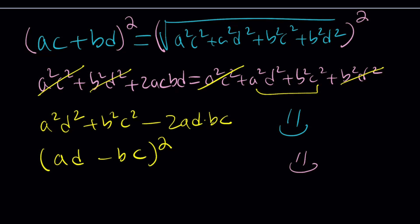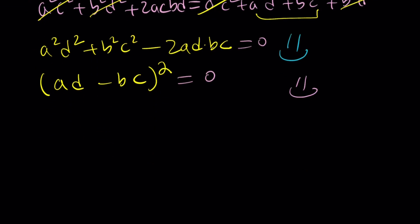So what does that mean? AD minus BC squared? We put everything on the same side. So this is equal to zero. That means AD is equal to BC. So what? We got that. But what are we looking for? We're not looking for ABCD.